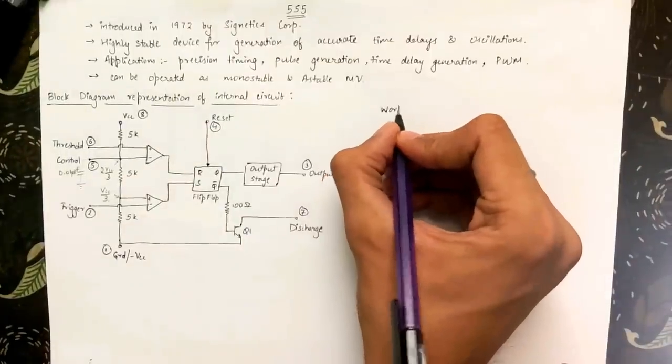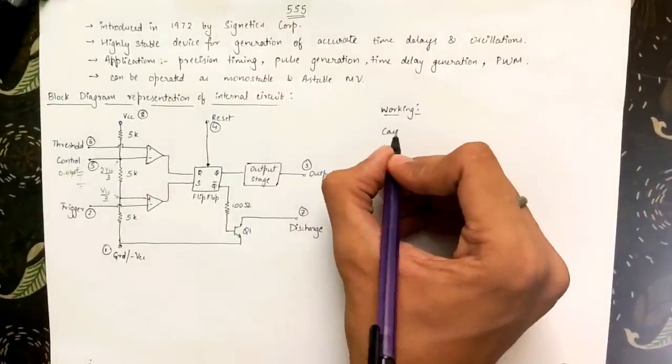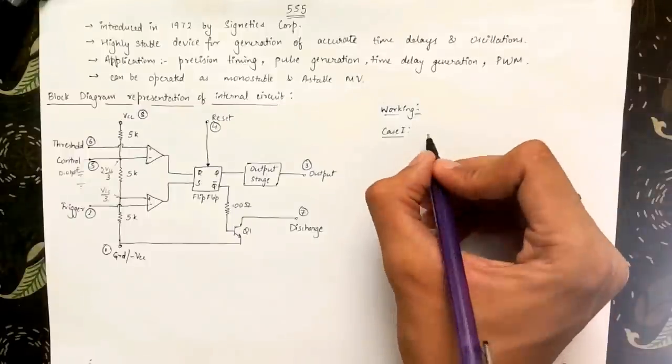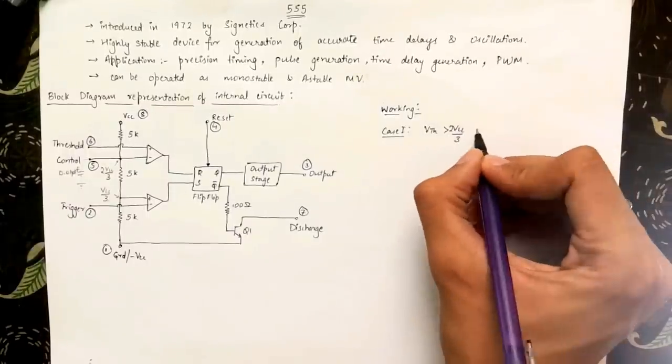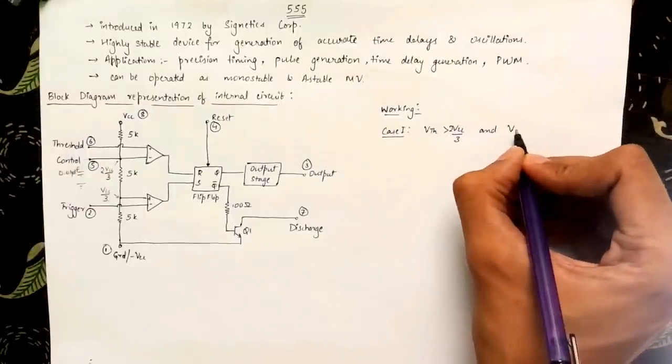Now let's start with the working of the IC. Consider the first case when the input to 555 is such that the threshold voltage is greater than 2Vcc by 3 and the trigger voltage is greater than Vcc by 3.